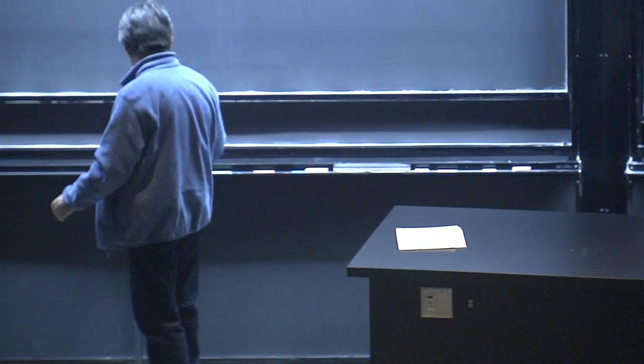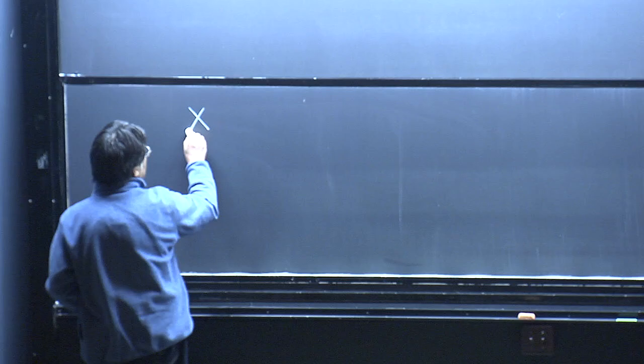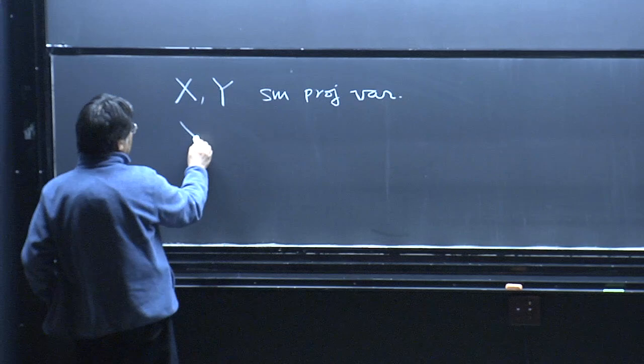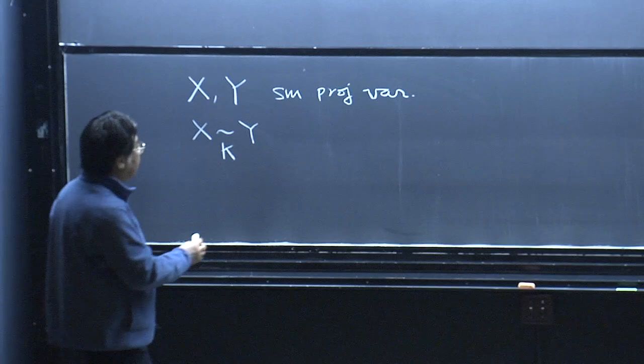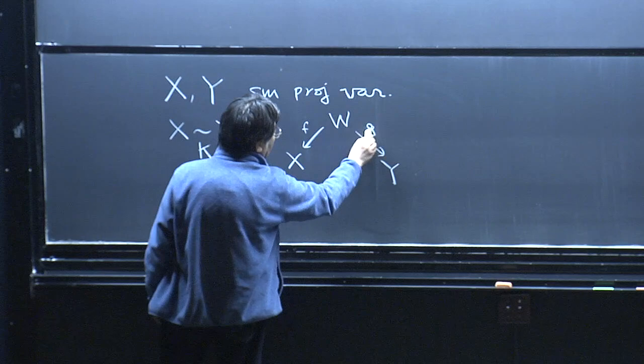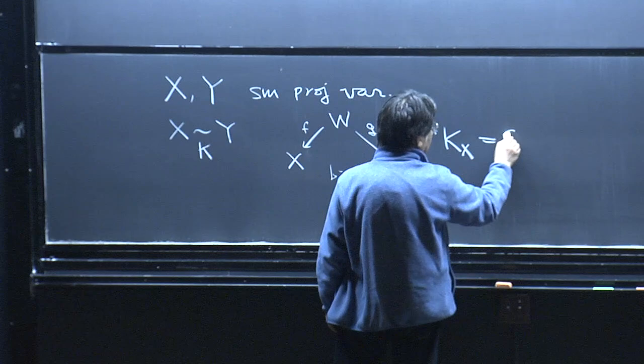What is K-equivalence and D-equivalence? Let X and Y be smooth projective varieties. They are called K-equivalent if the following condition is satisfied: first, they are birational — there is a so-called Hironaka hat where both F and G are birational morphisms — such that the pullback of the canonical divisor of X equals the pullback of the canonical divisor of Y.